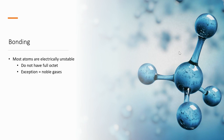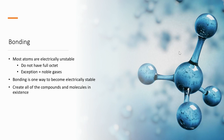The exception to this, of course, is the noble gases. These atoms are very stable, they have eight valence electrons, and they tend not to form bonds. Bonding is one way that atoms become stable, and by doing this, they create all of the compounds and molecules in existence.